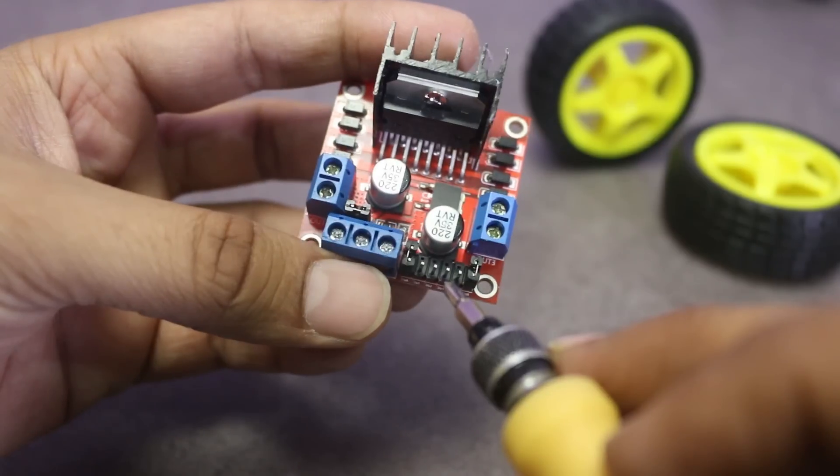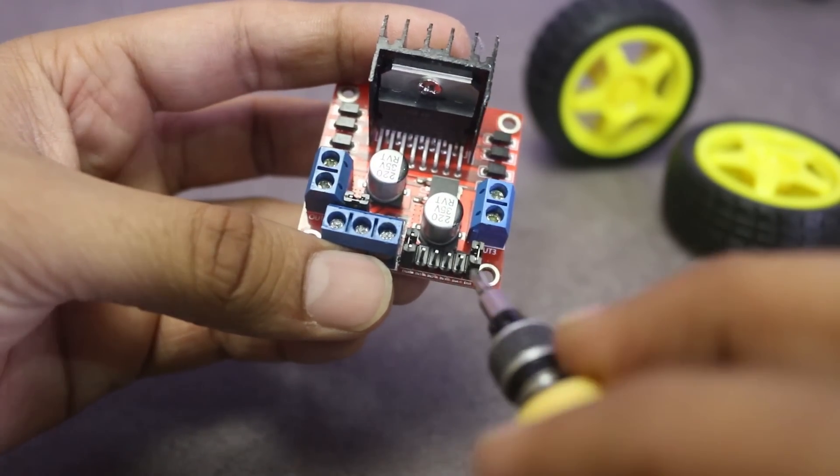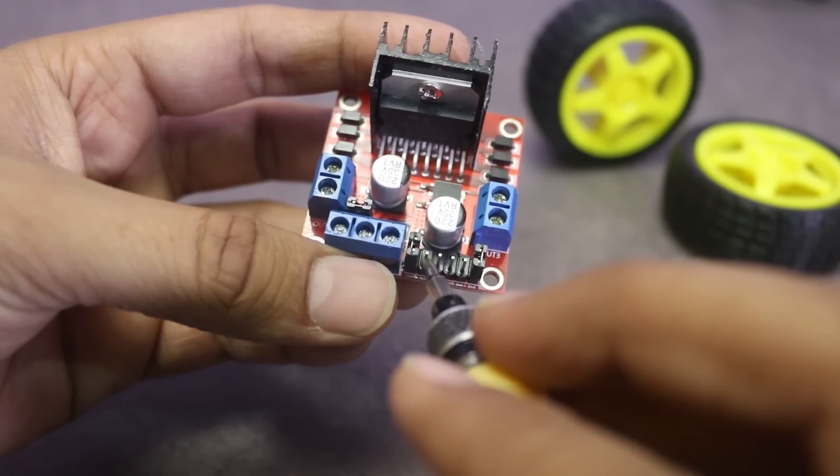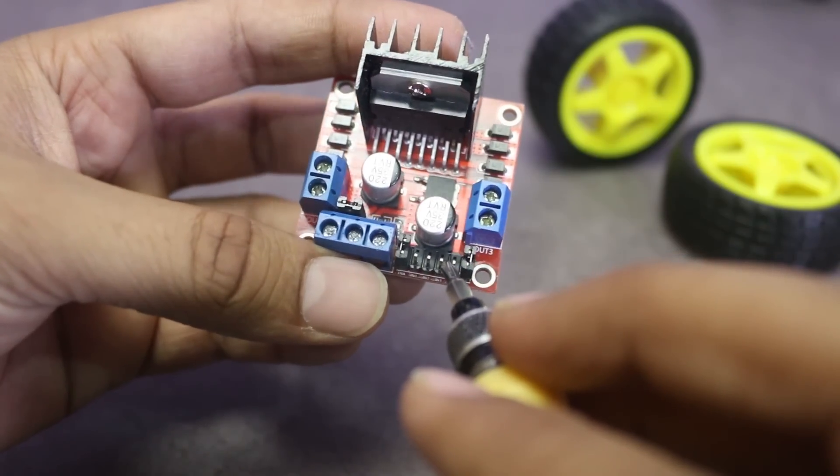In between these two jumpers, here are four pins to control direction of DC motors. For example, when pin 1 is high, motor A will rotate clockwise and when pin 2 is high, motor will rotate counterclockwise. Similarly, pin 3 and pin 4 work for motor B.